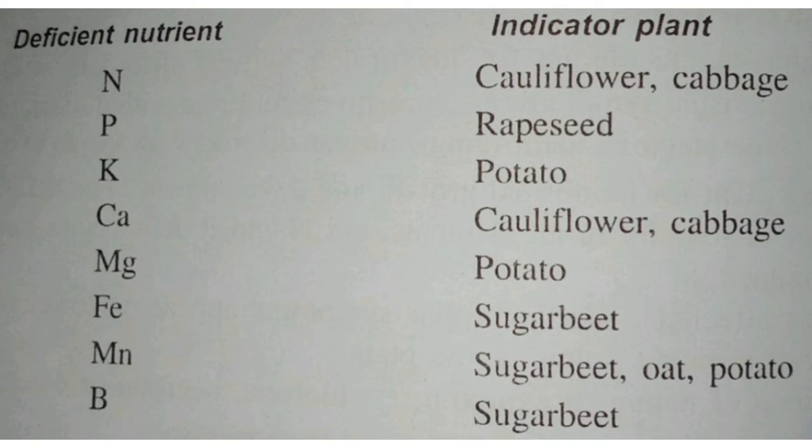Next is Magnesium — the indicator plant is potato. So potato is the indicator for both Potassium and Magnesium. Next is Iron — the indicator plant is sugar beet.